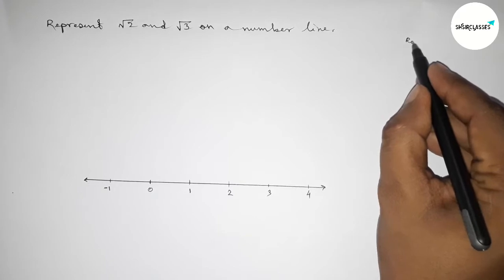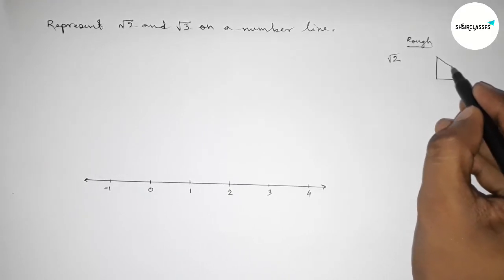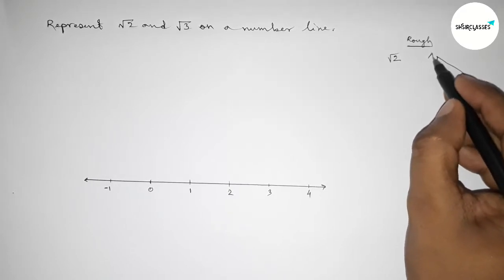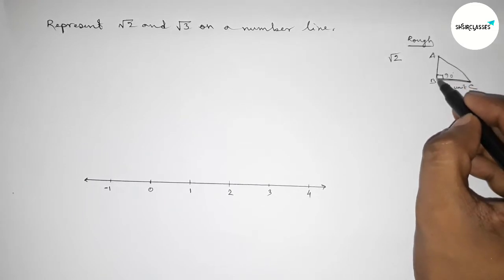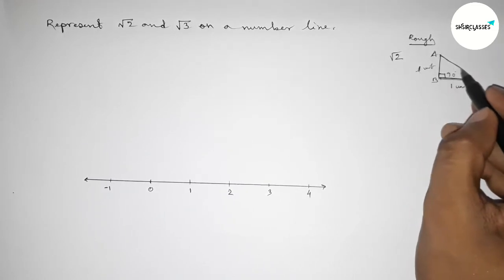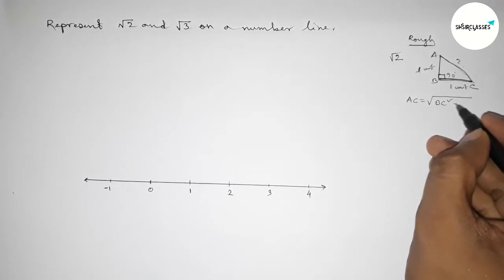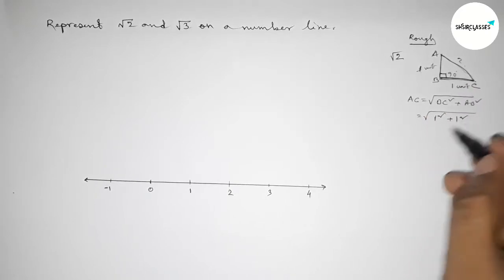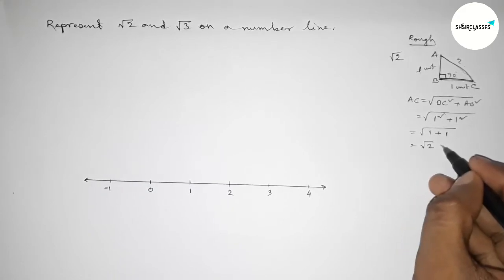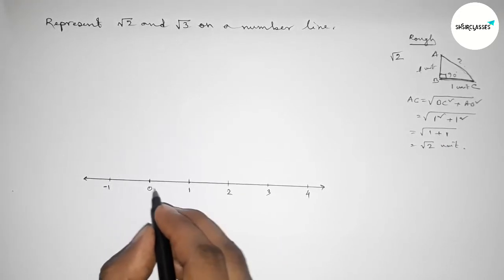Now roughly discussing the back-calculation. First we have to represent root 2, so drawing a right angle triangle ABC where this angle is 90 degrees. If we take the base equal to one unit and the perpendicular equal to one unit, then by Pythagoras theorem, AC equals root over BC squared plus AB squared. Since BC equals one and AB equals one, that gives root of one plus one, which is root 2 units.